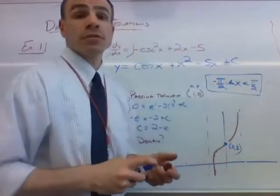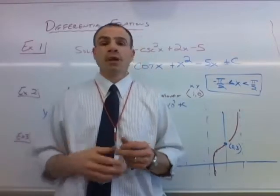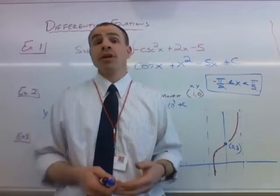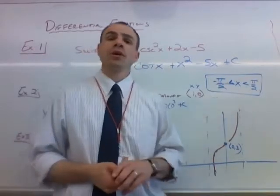Whereas for the general solution, now there's no particular point that we have to go through. So our domain would be all real numbers except for any multiple of pi over 2.